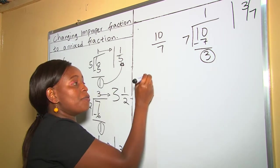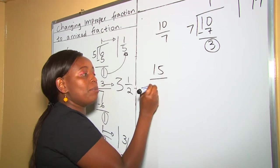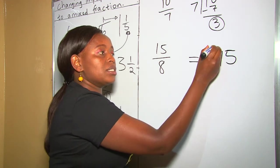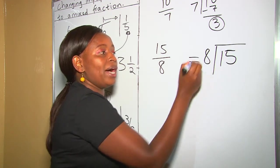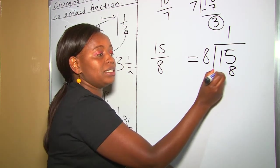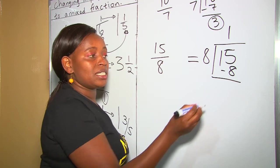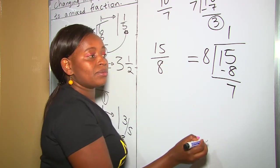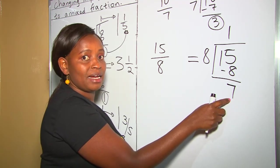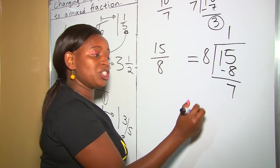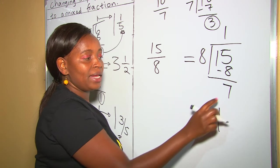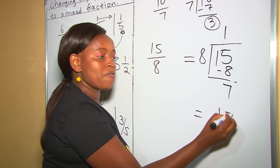Another example: 15 divided by 8. 15 is our dividend and 8 is our divisor. 15 divided by 8 goes 1 time because of 8. 15 take away 8 is 7. Remember, 7 can't divide 8, so it remains as a remainder. So, to write this one as a fraction, it's going to be 1 — our quotient becomes the whole number — and our remainder takes up the fraction part.